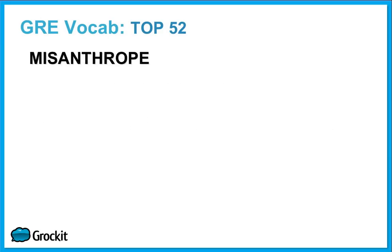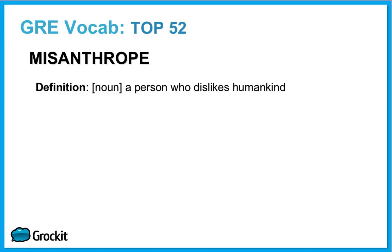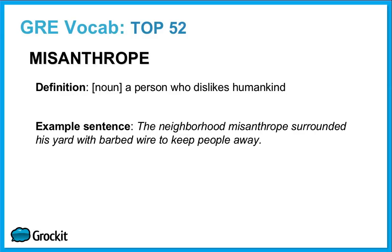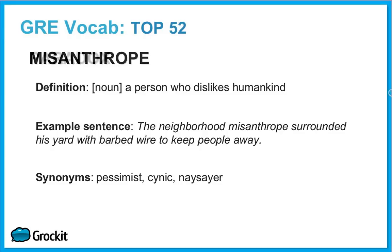Our thirty-seventh word is misanthrope. This is a noun. It's a person who dislikes all humankind. The neighborhood misanthrope surrounded his yard with barbed wire to keep people away. Synonyms: pessimist, cynic, and naysayer.